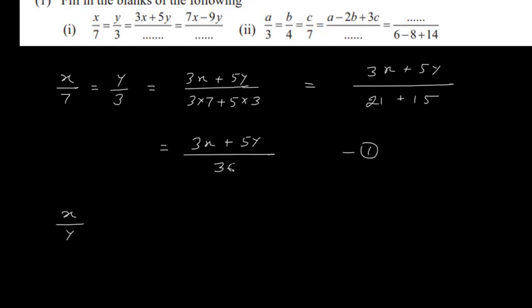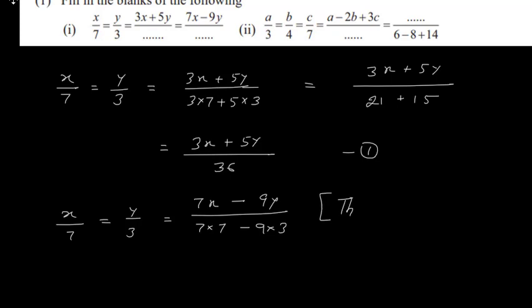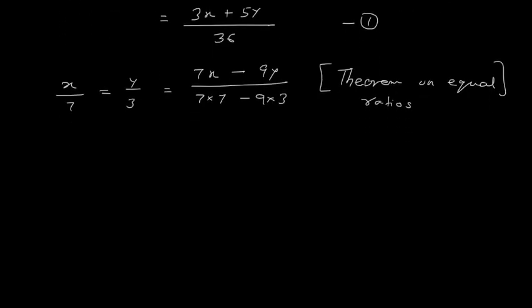Similarly, x/7 = y/3. Here in the numerator we have 7x — x is multiplied by 7, so the denominator is also multiplied by 7. Then we take minus 9y, so minus 9×3. By theorem on equal ratios, this equals (7x − 9y) upon (49 − 27).